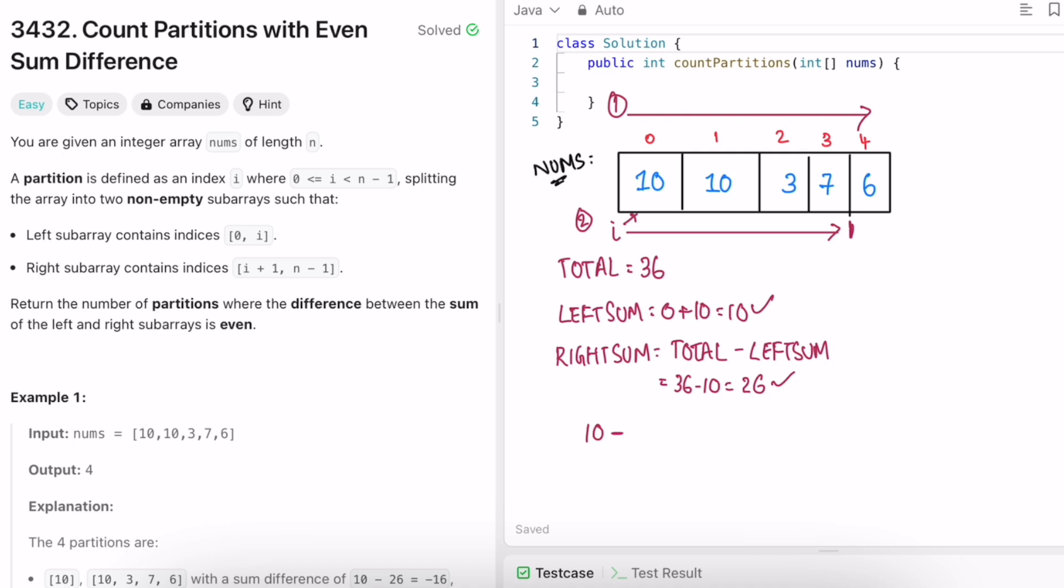So total is 36, left sum is 10. So right sum is equal to 26. So now you have these two values. You have to do left sum minus right sum, that is 10 minus 26. This value is equal to -16. Check if this -16 is even. So if you do modulo 2, it will leave a remainder 0. Yes. So this first partition, you store your output count which will be your output which is initially 0. Since you got one partition which is satisfying, you increment by one.